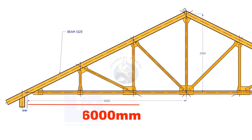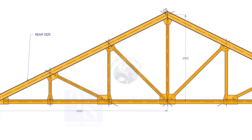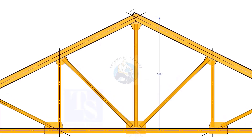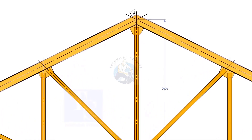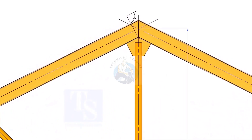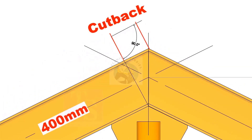Assume that the half span of a truss is 6000mm and the height of the truss is 2000mm. We want to calculate the cutback of a 400mm wide girder.